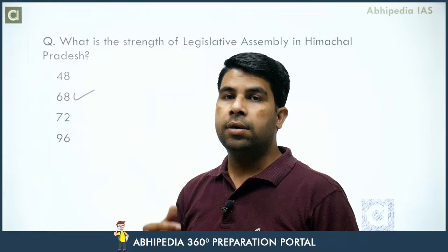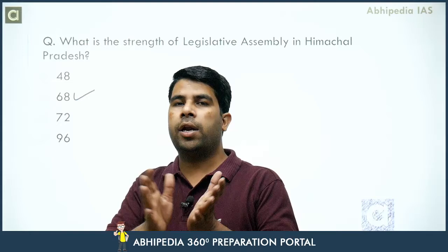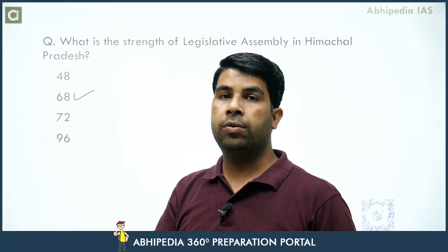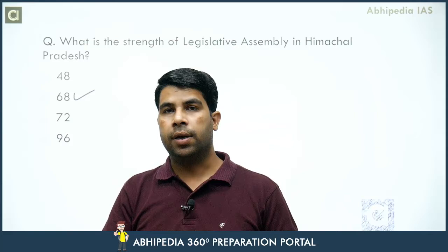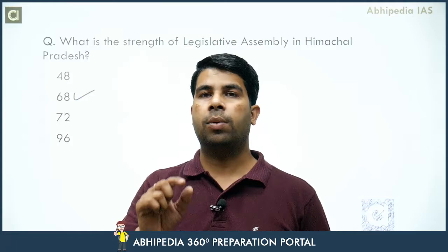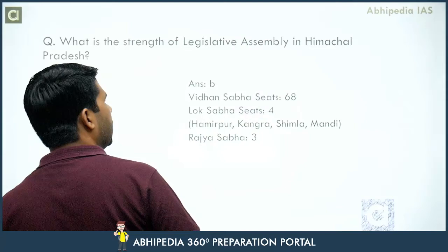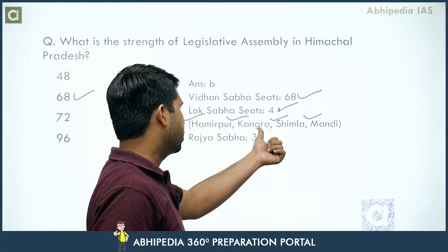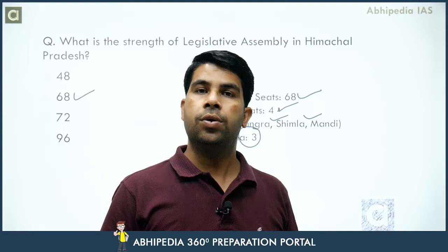The number is close to other options, so you may not be able to guess — you need to have read it at least once. Himachal Pradesh's size is approximately equal to Punjab and Haryana combined, but the population is far less — Punjab has over 2.5 crore while HP has less than 1 crore, around 65 lakh. That's why MLAs are fewer. To enrich your knowledge: Lok Sabha seats are 4 — Hamirpur, Kangra, Shimla, and Mandi. Rajya Sabha seats are 3. Vidhan Sabha seats are 68.